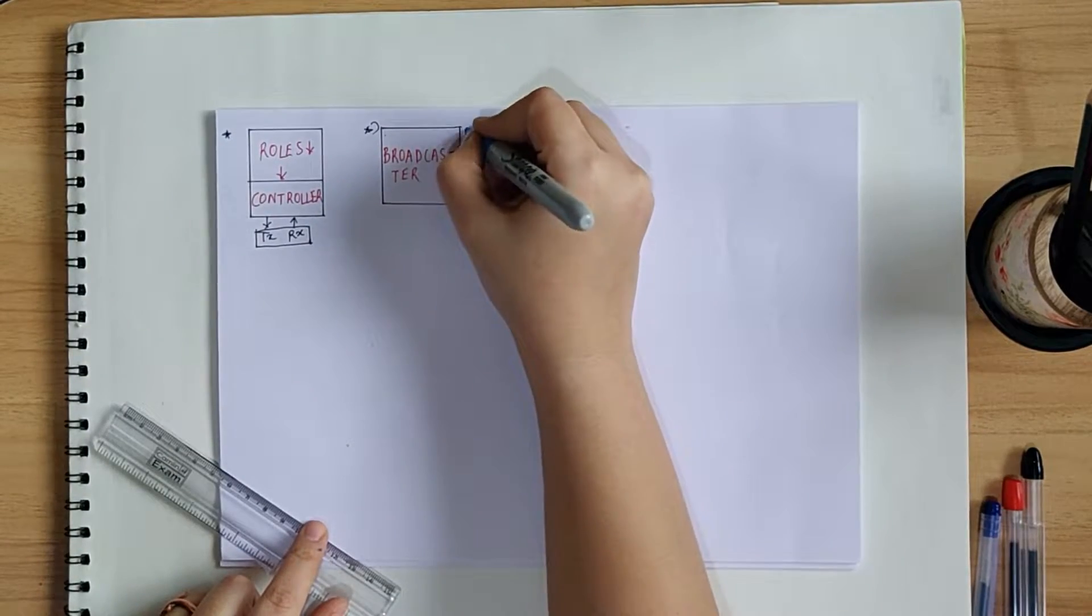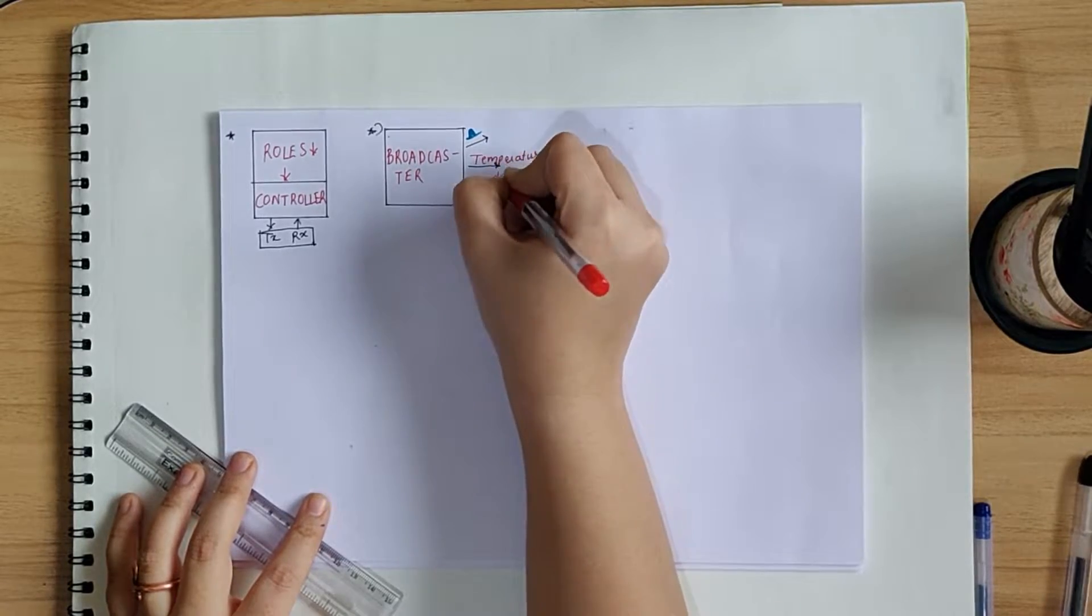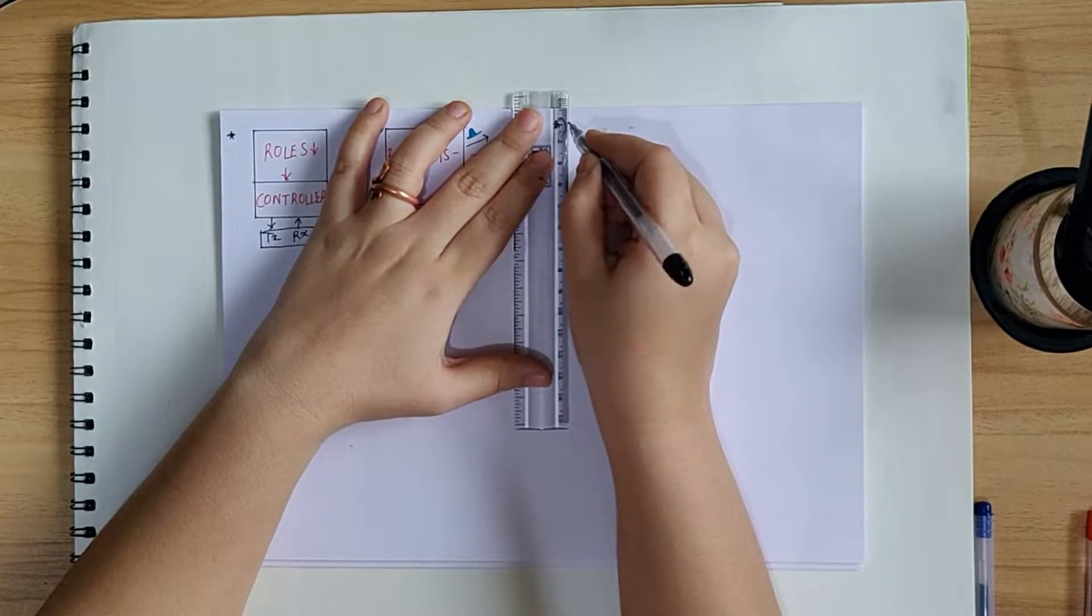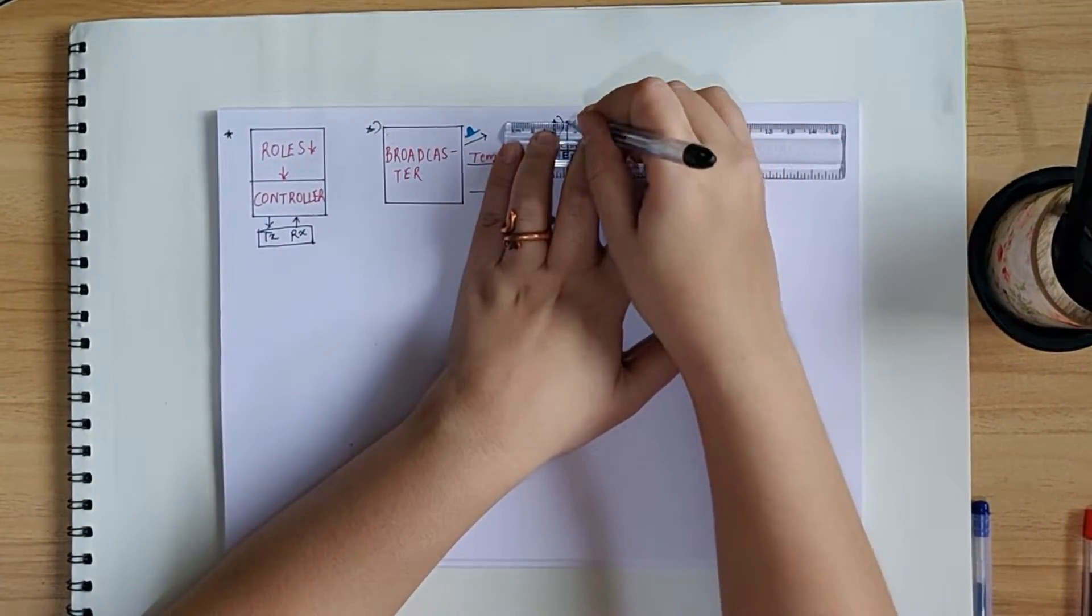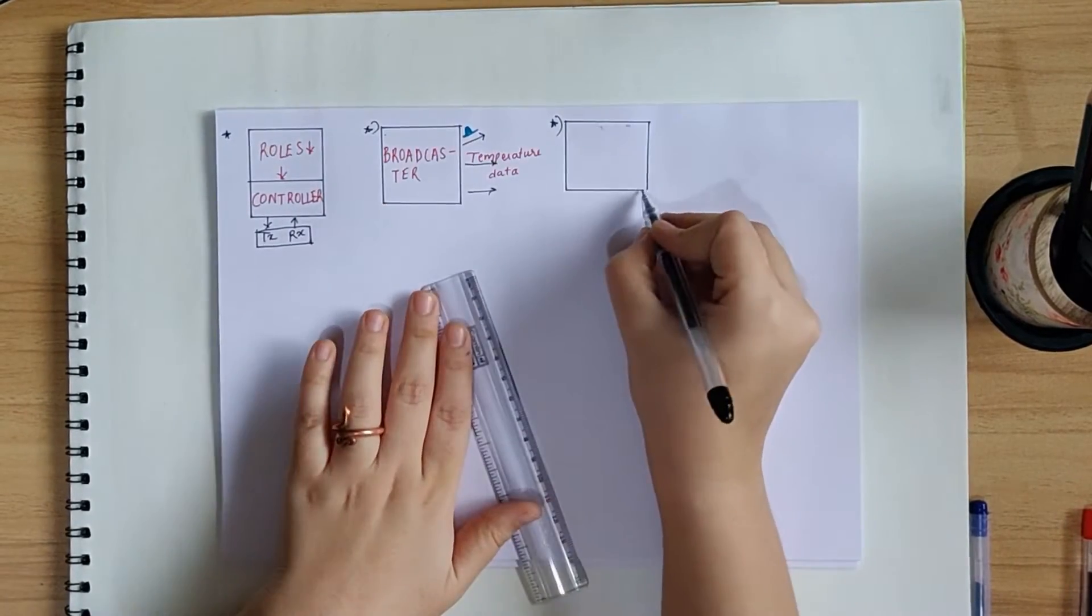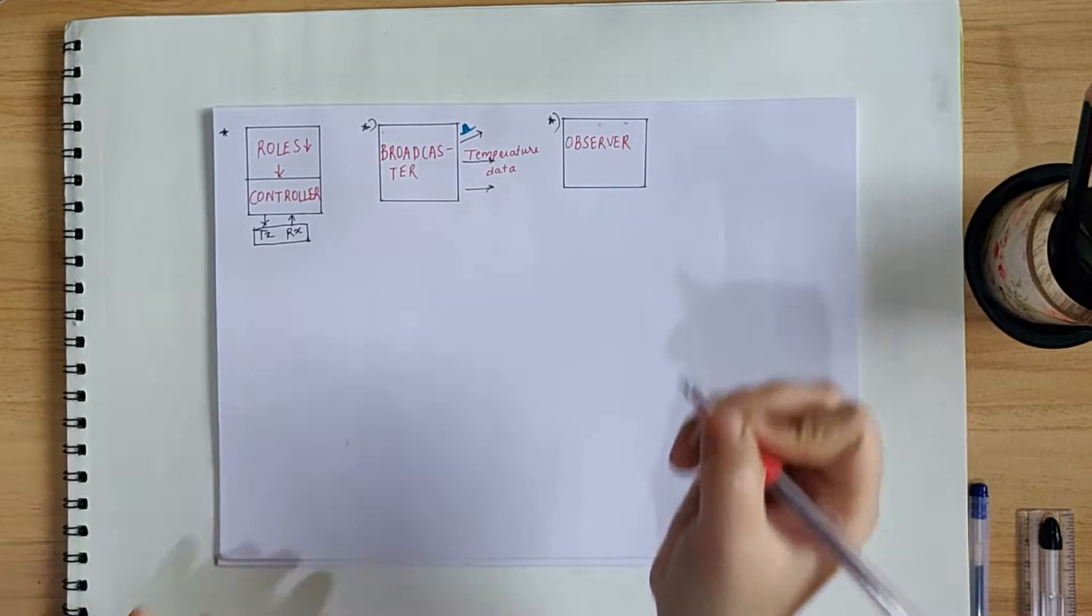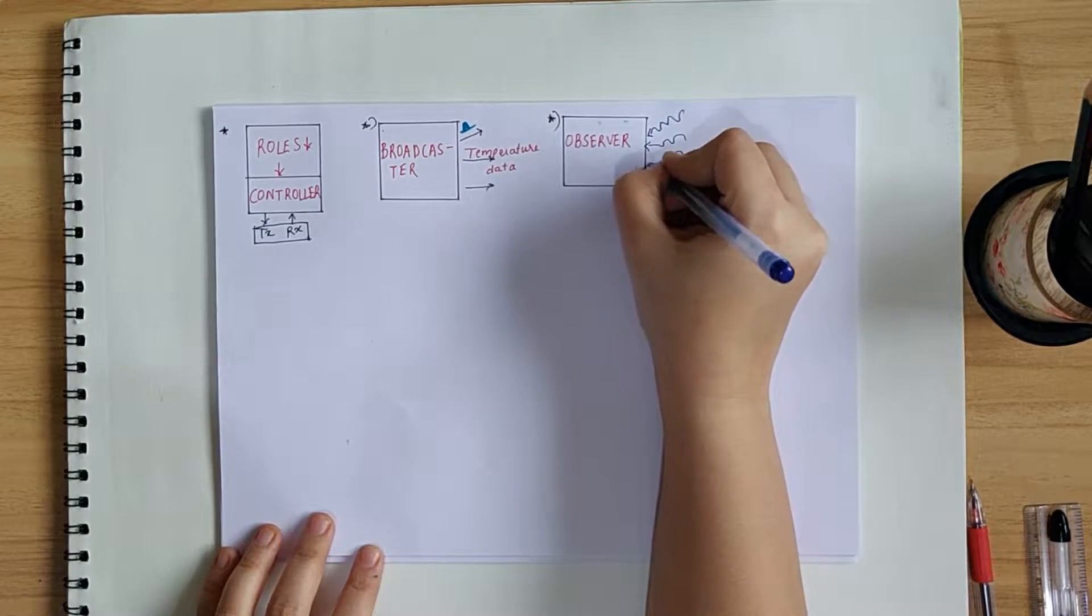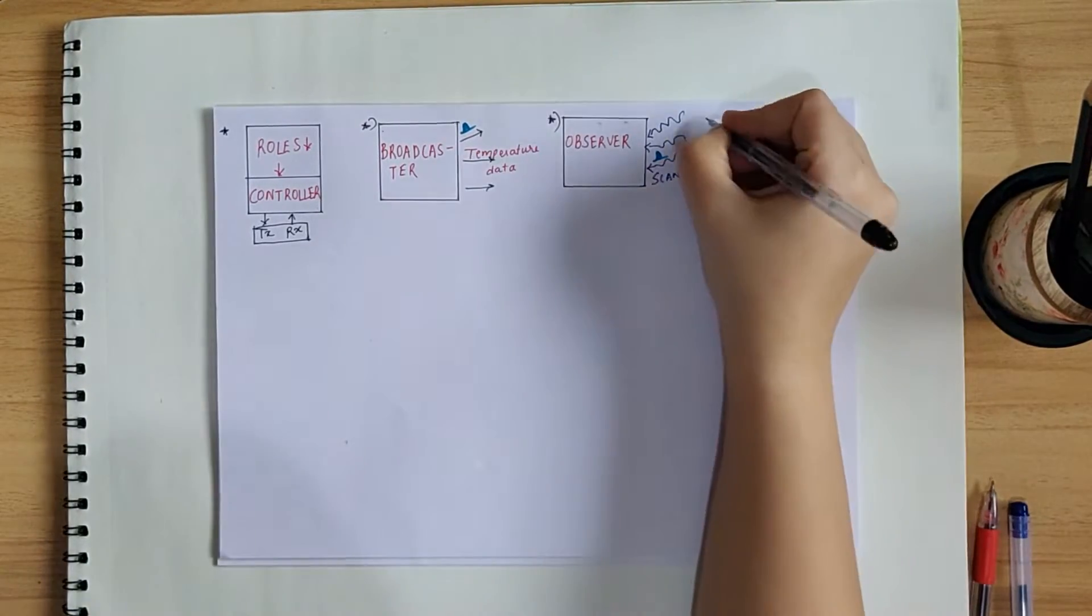The next is observer. The observer role is complementary or opposite of the broadcaster. A GAP observer is a Bluetooth low-energy device that constantly scans for nearby advertising devices. Thus, it can read the advertisement and scan the response packets from these devices, but it cannot establish further connections. That means it can simply observe the data.